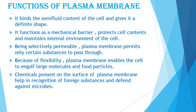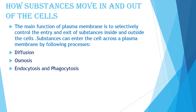What are the functions of the plasma membrane? It binds the semi-fluid contents of the cell and gives a definite shape to the cell. It functions as a mechanical barrier, protects cell contents, and maintains the internal environment of the cell. Being selectively permeable, the plasma membrane permits only certain substances to pass through. Because of its flexibility, the plasma membrane enables the cell to engulf large molecules and food particles. Chemicals on the surface of the plasma membrane help in recognition of foreign substances and defend against microbes. The plasma membrane is called a selectively permeable membrane as it only allows certain substances to pass in and out of the cell, and its main function is to selectively control the entry and exit of substances.